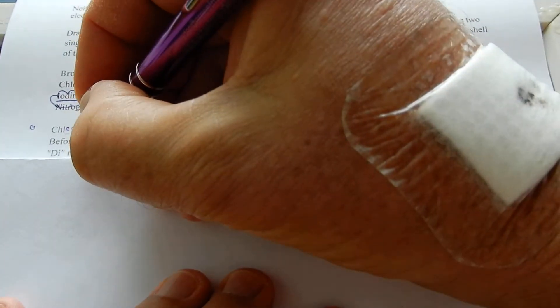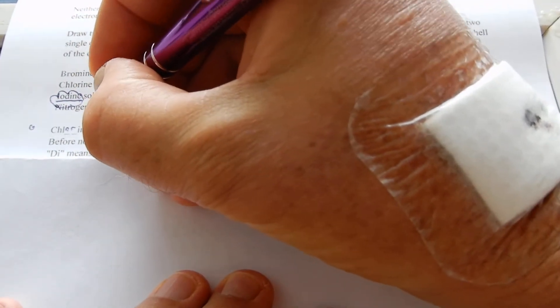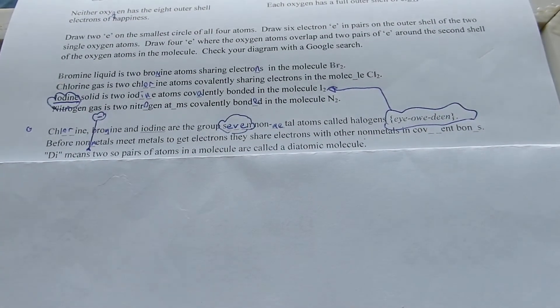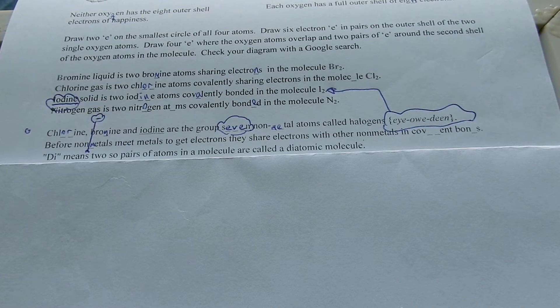Before non-metals meet metals to get electrons, they share electrons with other non-metals in covalent bonds.